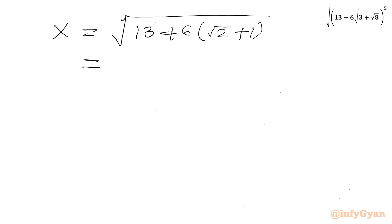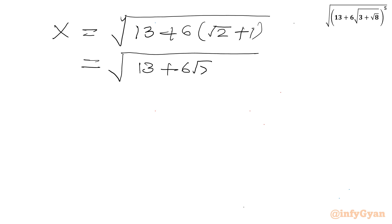Now I will expand this bracket. So it gives us 13 plus 6 times root 2 plus 6, which I can write as the square root of 19 plus 6 times root 2.